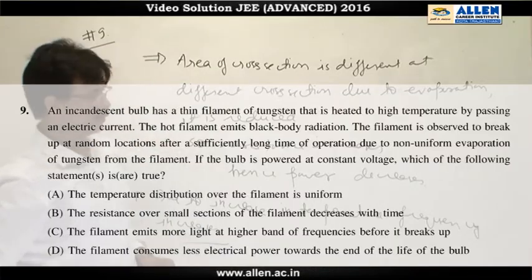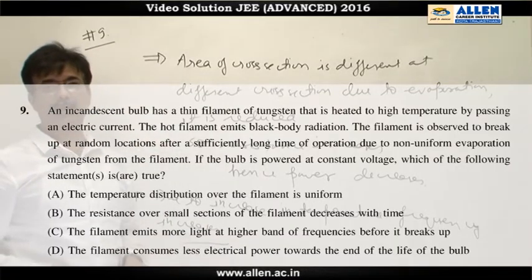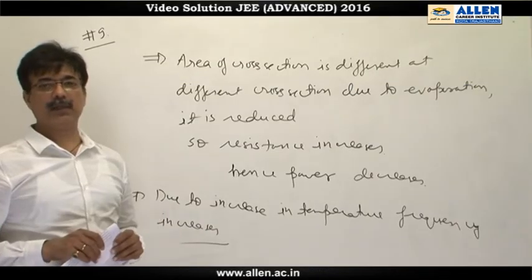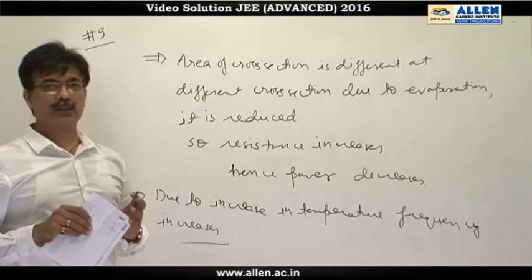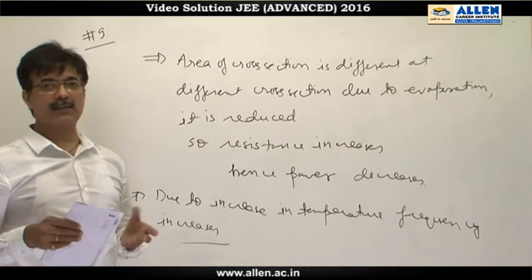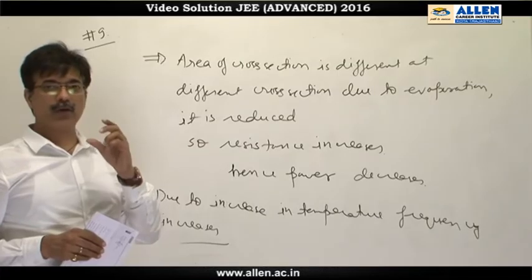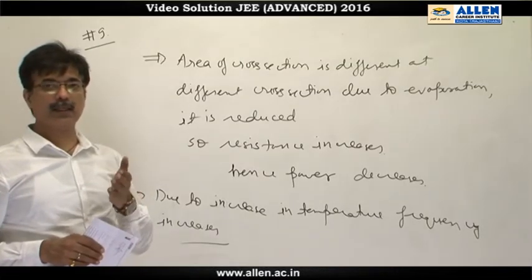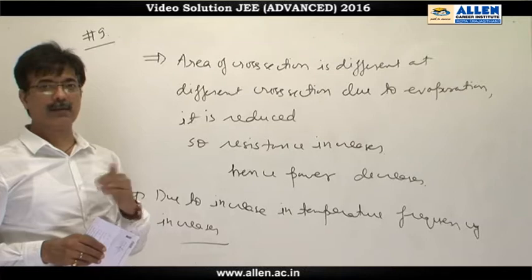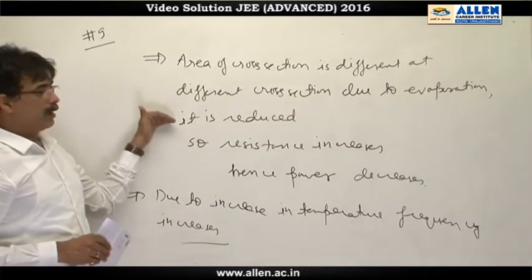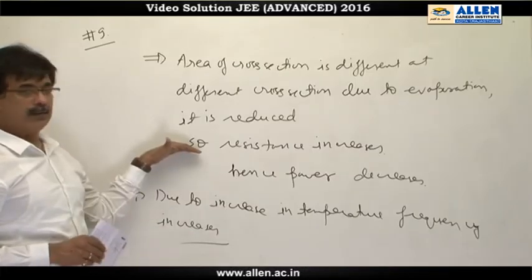Question number 9. This question is a conceptual question. In fact, the filament temperature is increasing and it has been given that due to evaporation, continuously it is losing some element. So, due to evaporation, the area of cross section is decreasing and due to decrease in area of cross section, resistance is increasing. So first thing is, area of cross section has reduced. So resistance has increased.